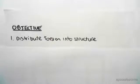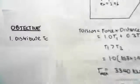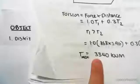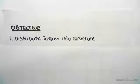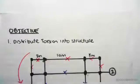Hey guys, the objective of this video is to distribute the torsion into the structure. In the previous video, we worked out the maximum torsion, which was 3340 kilonewton meters. It's now time to put that torsion into the structure and see which elements and members take it.